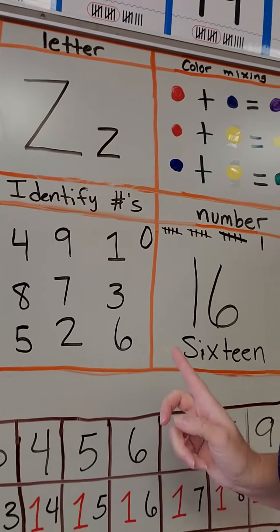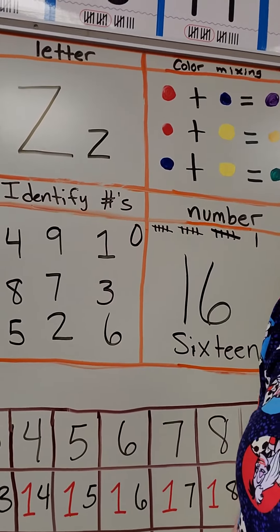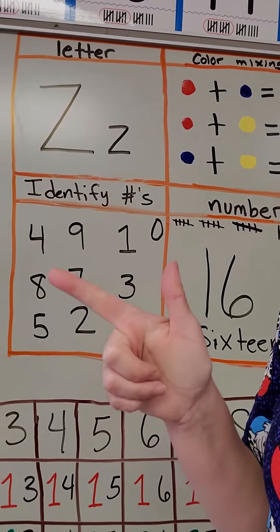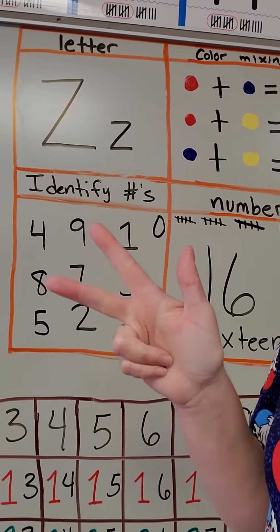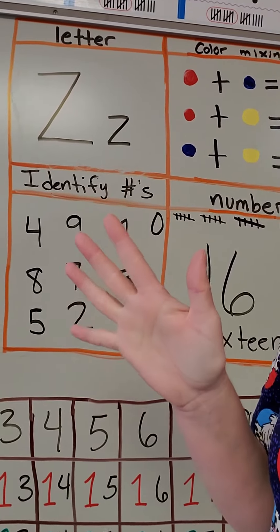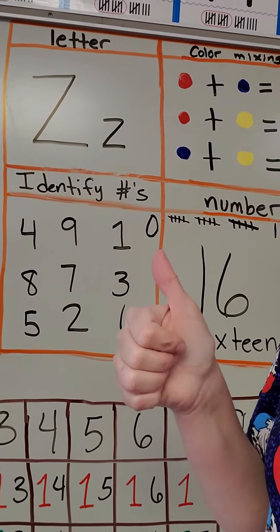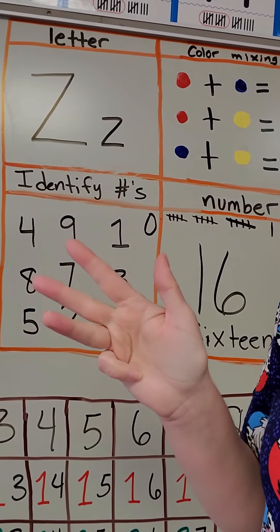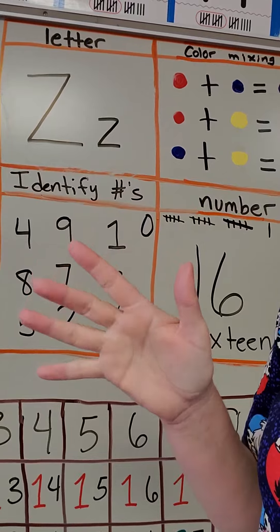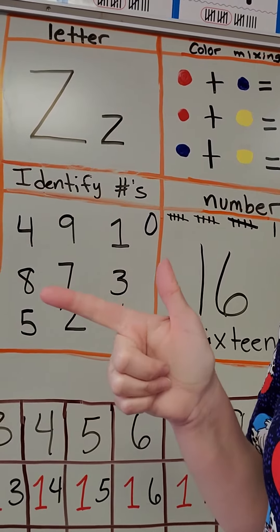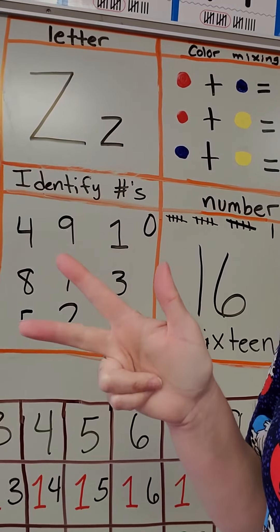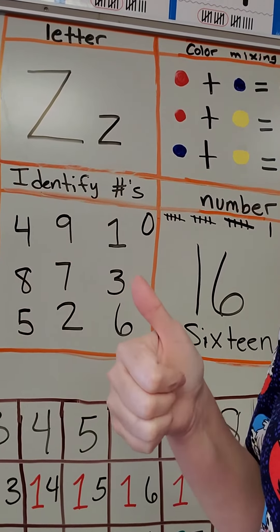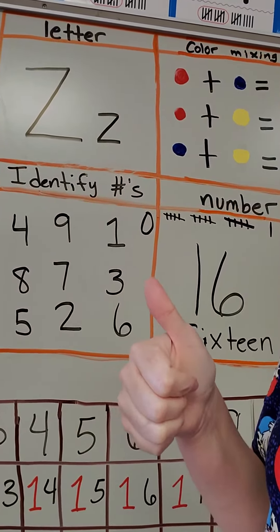And then we're counting to 16 and identifying to 16: 1, 2, 3, 4, 5, 6, 7, 8, 9, 10, 11, 12, 13, 14, 15, and 16.